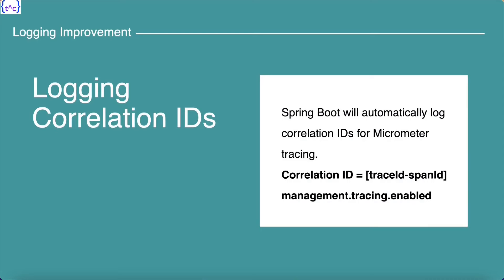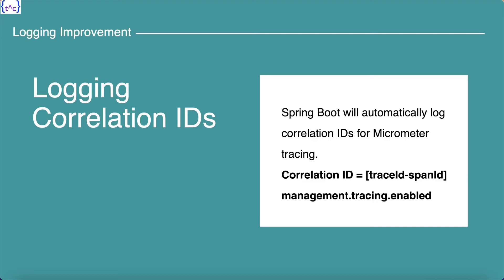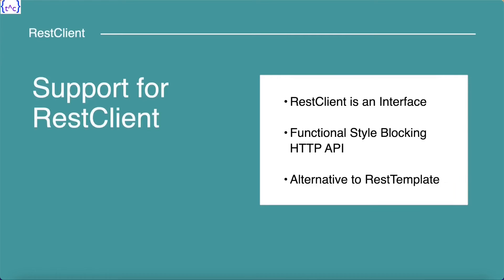Another key enhancement is logging improvement. Spring Boot applications will by default automatically start logging correlation IDs for Micrometer tracing. The format for the correlation ID will be in square brackets — trace ID hyphen span ID. Correlation IDs while logging are extremely important for debugging your applications and they make a developer's life easy. This is a really significant improvement in Spring Boot 3.2. If for any reason you would like to disable it, you can set the management.tracing.enabled property to false. By default it is set to true.